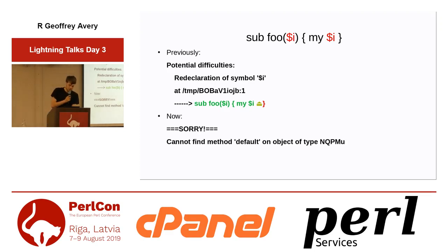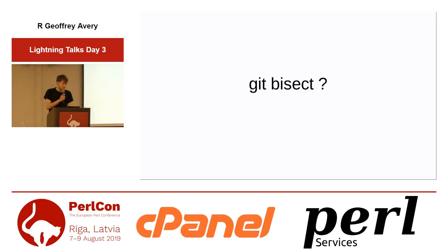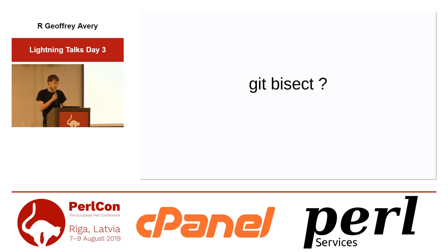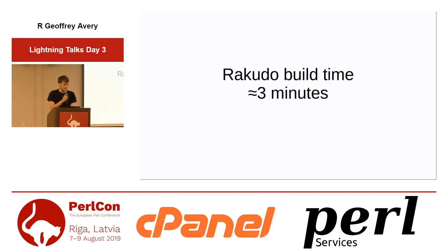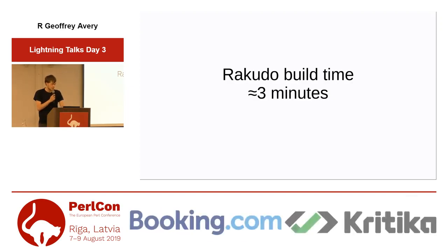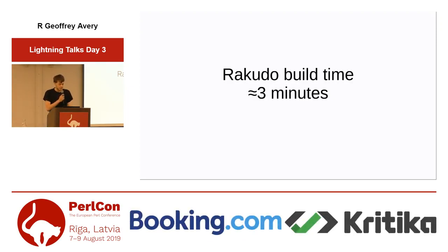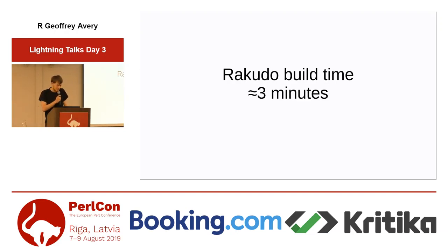A lot of people would suggest using git bisect, which does binary search between revisions and works well, but Rakudo's build time is nearly three minutes. You'd have to wait three minutes, test, wait three minutes again — nobody should spend time doing that. Instead you can use git bisect run with a shell script, but in Rakudo we have over 9,000 commits since the Christmas release, roughly 13 bisection steps, so three minutes times 13 is just too long.